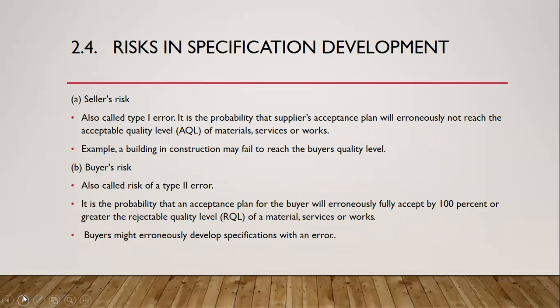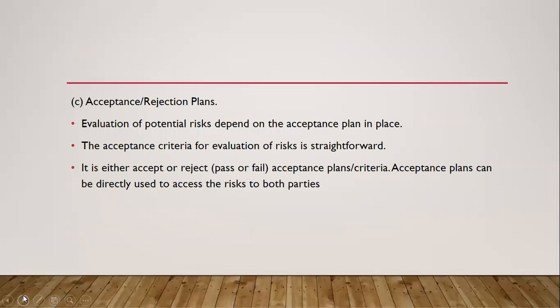There are risks involved in specification. The first is the seller's risk, referred to as a type one error, where the seller might accept or reject your item based on the acceptable quality level of material or service. The second is the buyer's risk, also called a type two error, which involves the rejectable quality level — the buyer can reject an item if it did not meet the standard. The third is the acceptance-rejection plan, which is an evaluation of the potential risk that can emanate from accepting or not accepting a product.